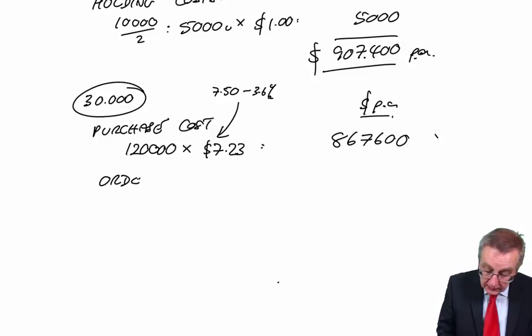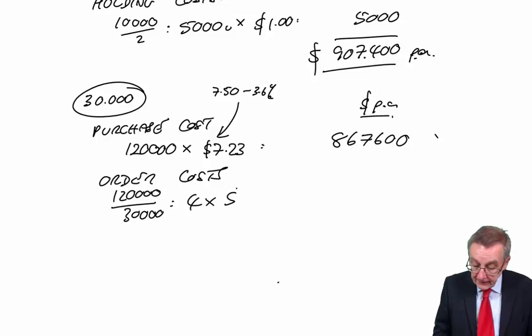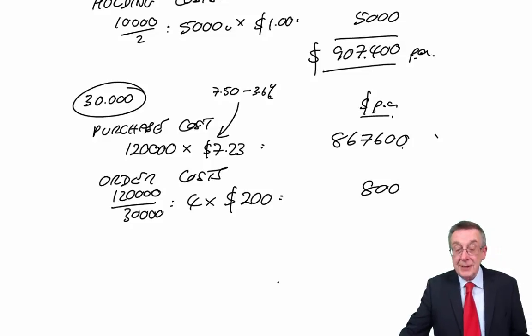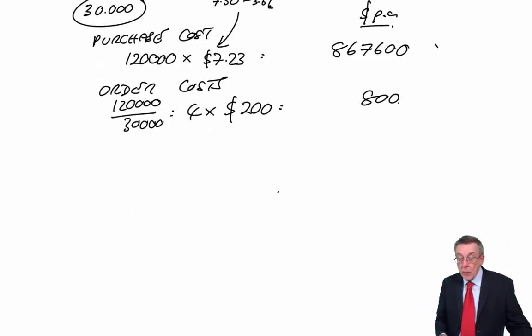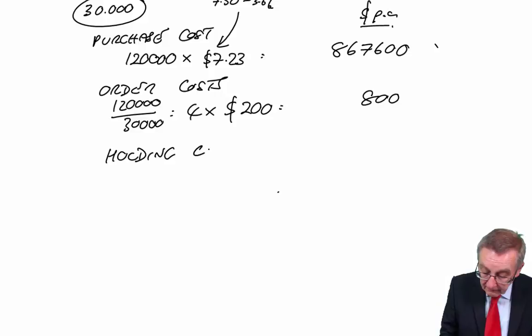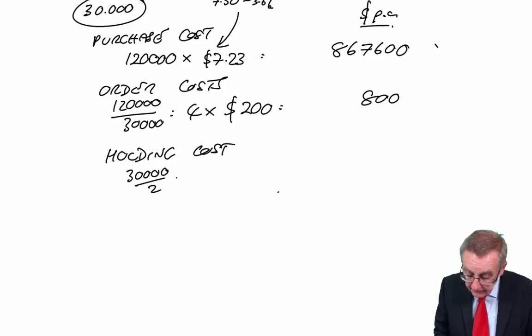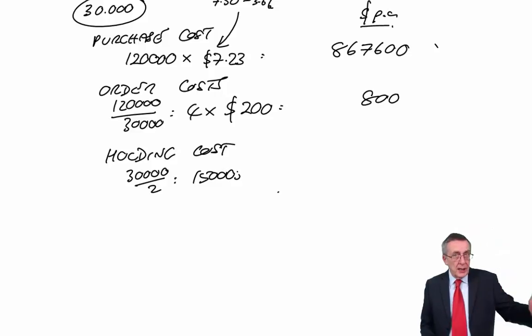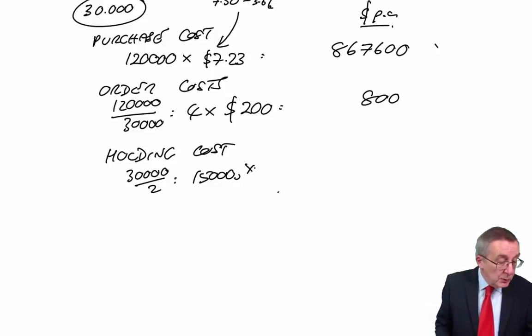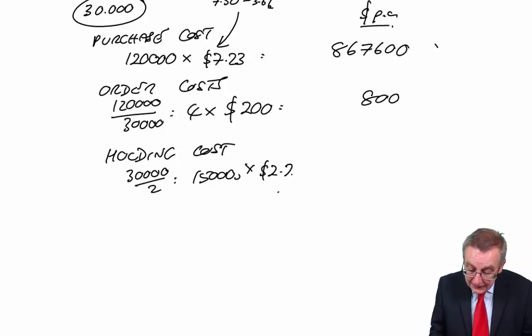The new cost per unit, so over a year for 120,000, I get $867,600. What about the order costs? We still need 120,000 a year, but if we're ordering 30,000 each time, we only need four orders. So $200 each, that drops to $800. And finally, the holding cost. If we're ordering 30,000 each time, the average inventory will be 15,000 throughout the year. And the holding cost per unit, the last sentence said it will be $2.20 per unit. So over a year this cost will change to $33,000.